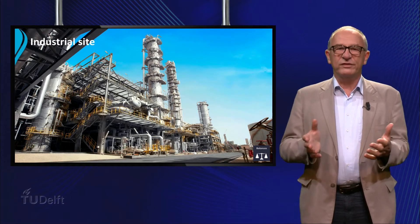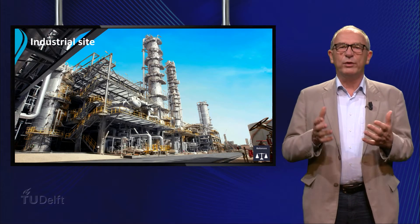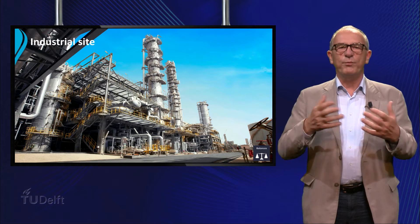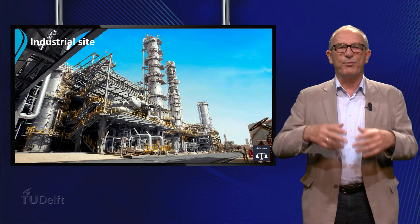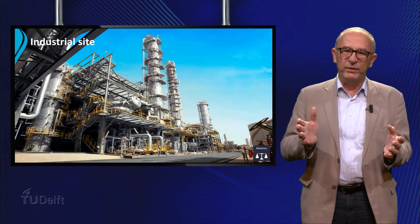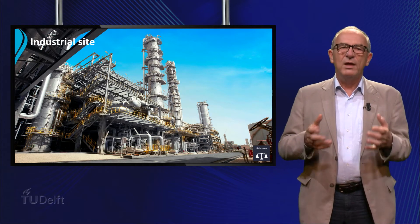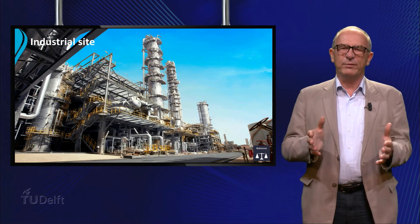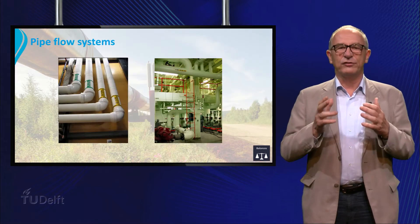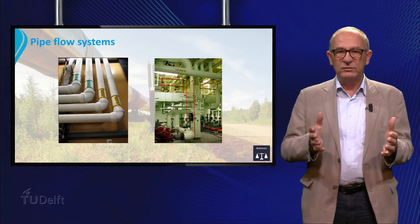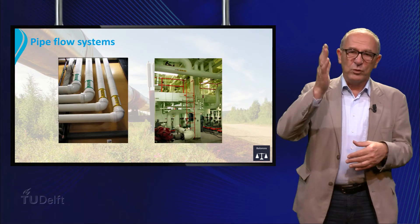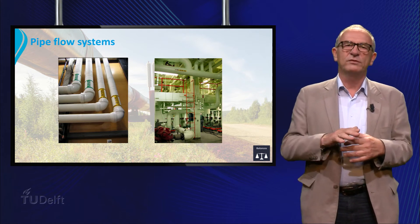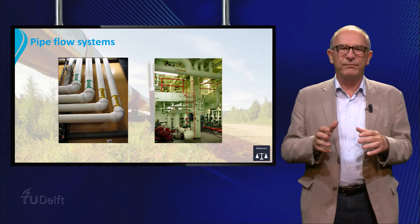If you visit an industrial site where bulk chemicals are produced, you see complex systems of pipes and equipment. These systems consist of many different elements, such as straight pipes, vertical pipes, horizontal pipes, valves, bends, etc.